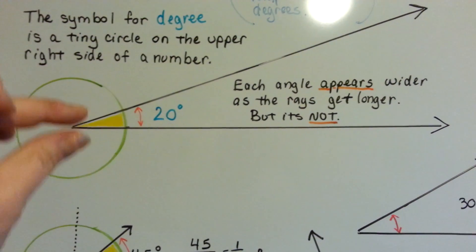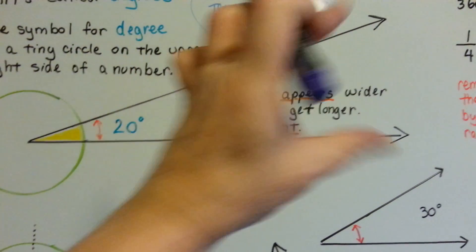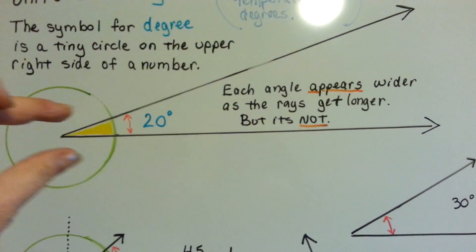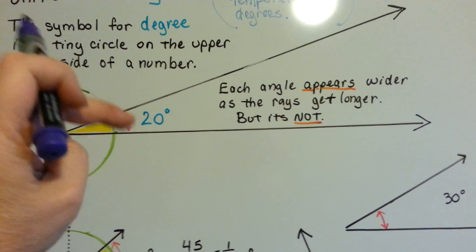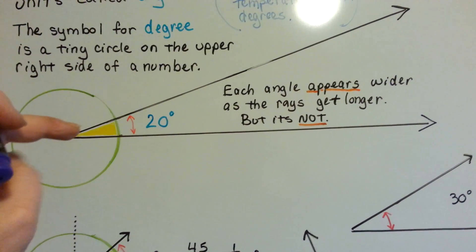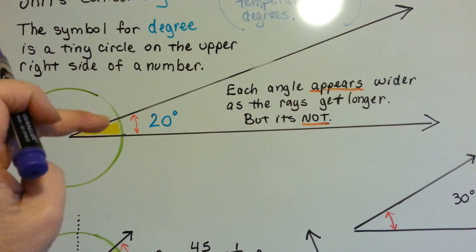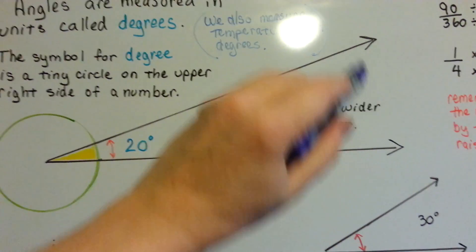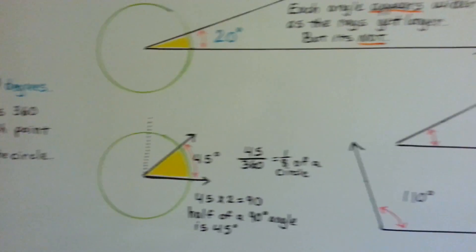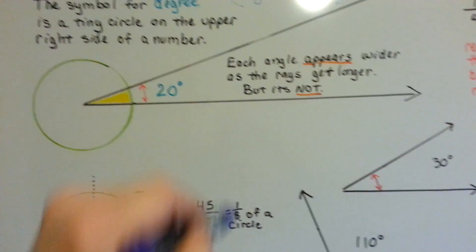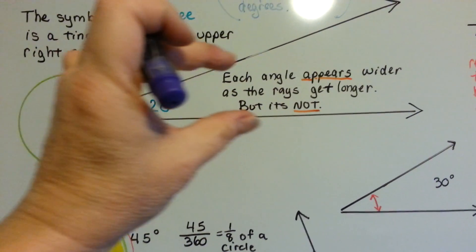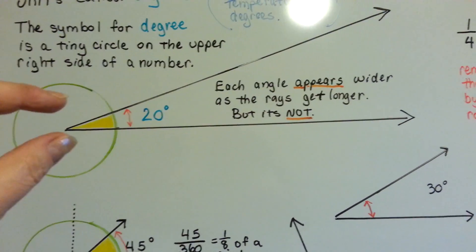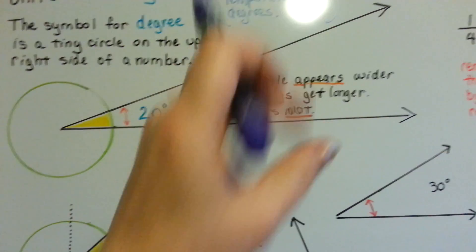Each angle appears wider as the rays get longer, but it's not actually getting bigger. Because when we measure it, it's still a 20-degree angle. If we measure it here, it's still a 20-degree angle — it just means our circle is really big. But the measure does not grow. The rays get farther apart, but the measure of 20 degrees stays.